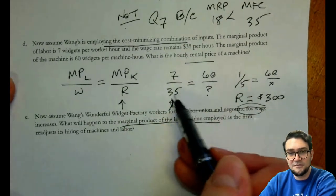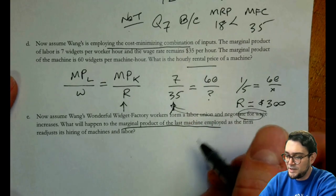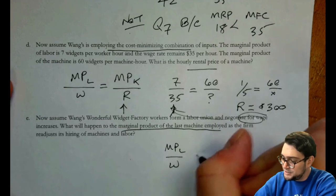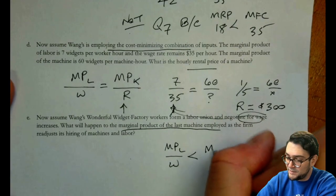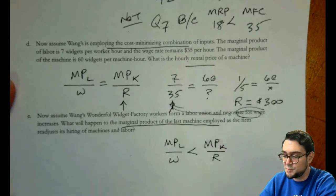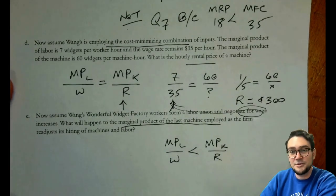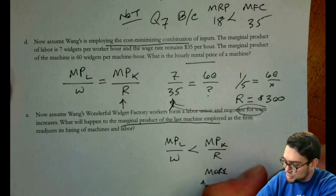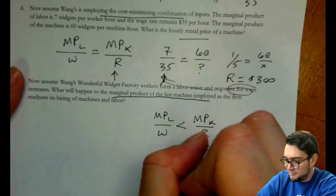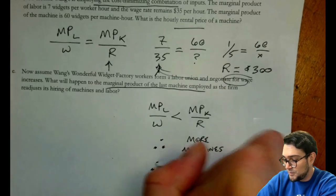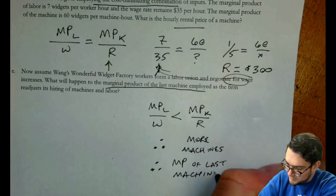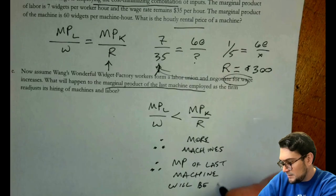So if that's true, that the denominator for this one increases, then I know that really this number is going to be smaller, right? So the MPL over the wage is now going to be smaller than the MPK divided by the rent. So that must be true as a result of this wage rising. Because it made this a smaller value. So they're going to consume more machines in response to that, right? So therefore they want more machines.